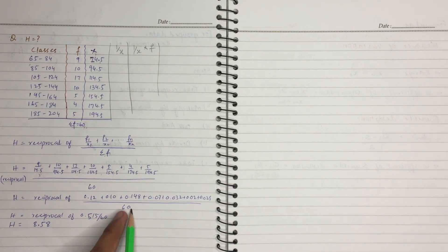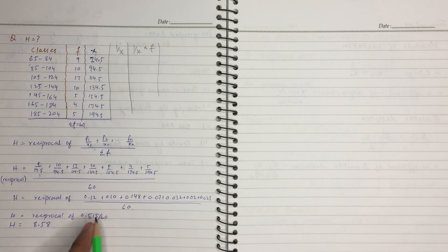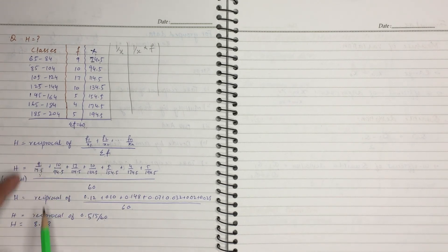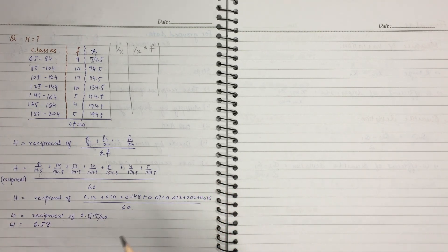So if we take this sum we have 60. Divided by 60, we will solve. The value is 0.515 divided by 60.